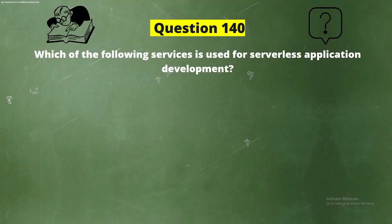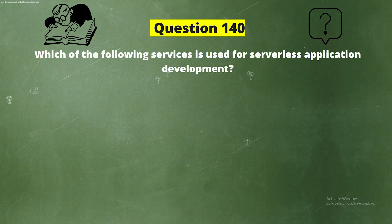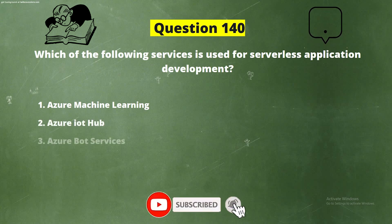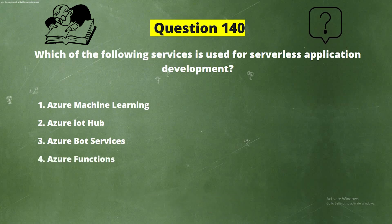Question 140. Which of the following services is used for serverless application development? Options: Option 1, Azure Machine Learning; Option 2, Azure IoT Hub; Option 3, Azure Board Services; Option 4, Azure Functions. The correct answer is Option 4, Azure Functions.